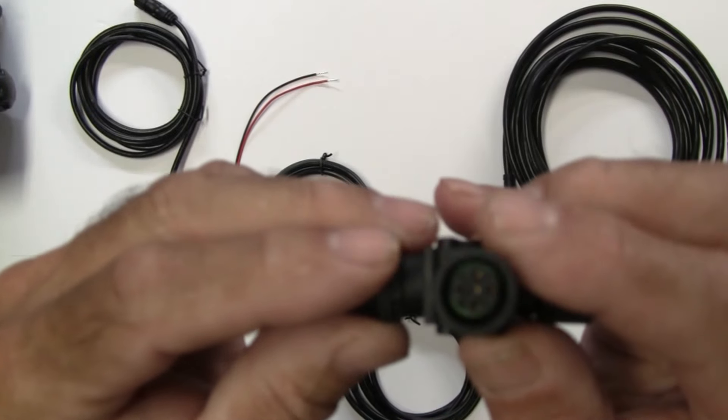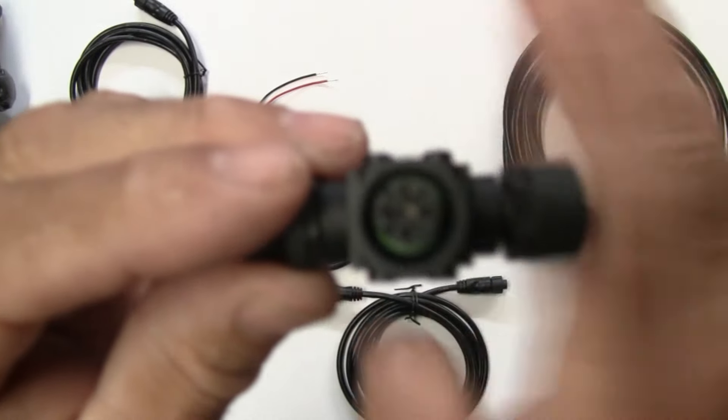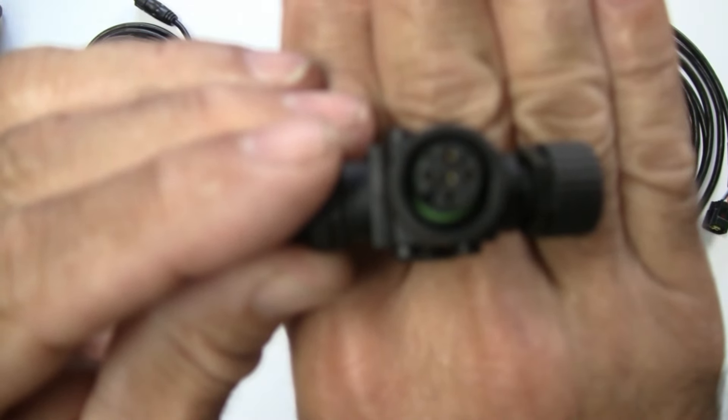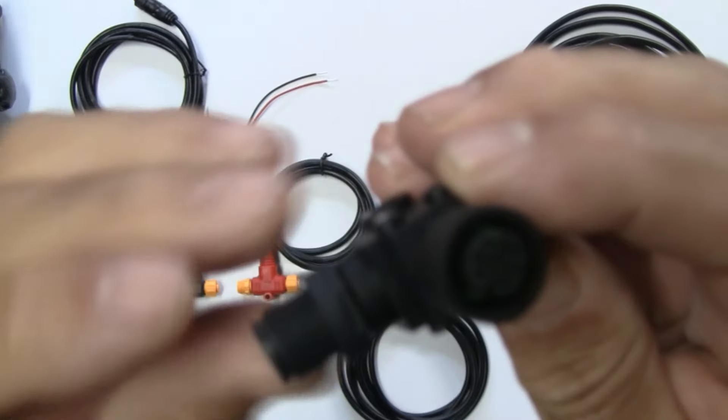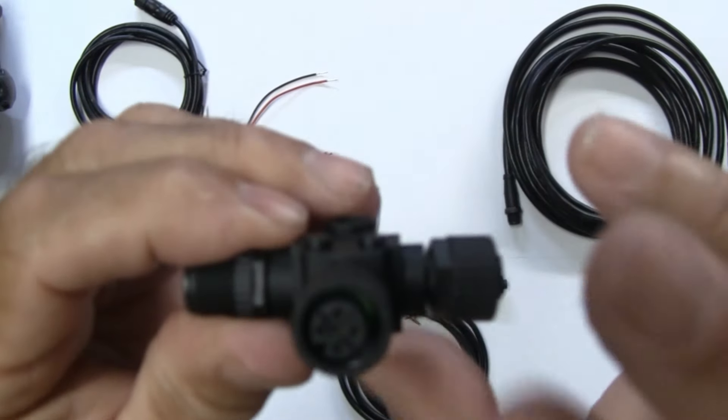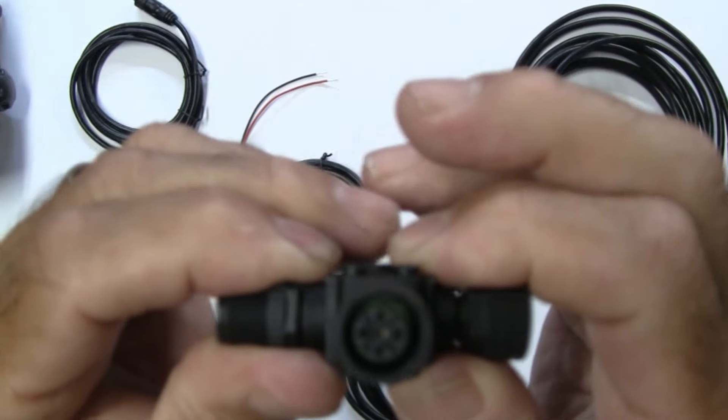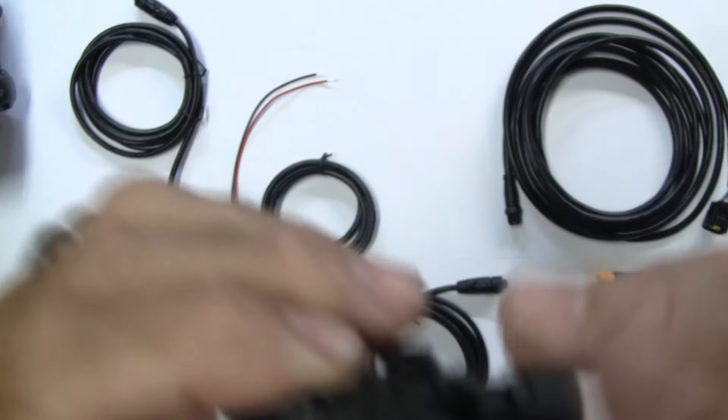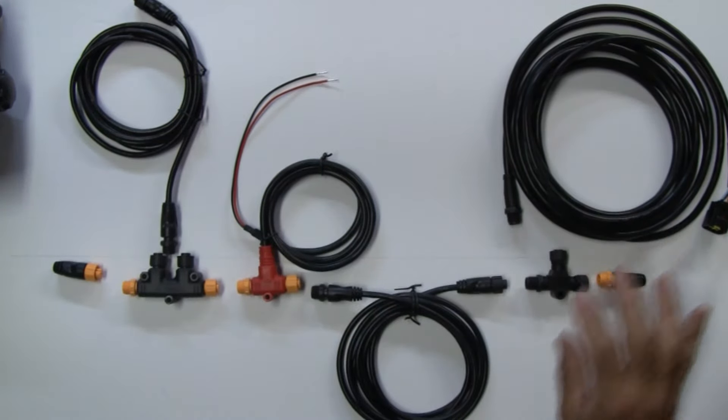It's a five pin connector that's part of the bus. There is a male connector on one side, female on the other, and the top of the T, or the bottom part of the T depending on how you look at it, that's for the drop cable. That's always going to be a female.